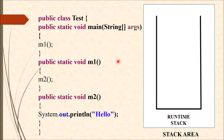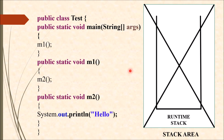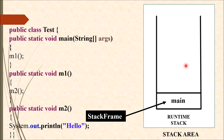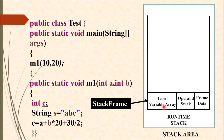When the program is executed completely and the runtime stack is empty, JVM will erase this runtime stack from the stack area in order to free the memory. Each entry pushed inside this runtime stack is called a stack frame or activation record. This stack frame is divided into three parts: local variable array, operand stack, and frame data.